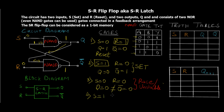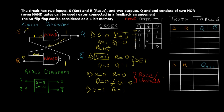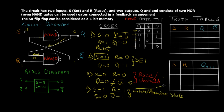For NAND Case 4: S = 1 and R = 1. This is the remaining case, so we take the previous state output. Using the Set state (Case 2) as the previous state where Q = 0, that 0 is fed back to the upper NAND gate. With S = 1 and feedback = 0, the output Q = 1 and Q-bar = 0 — which matches the previous state. This is the Latch or Previous state, where the flip-flop stores and retains the memory bit.